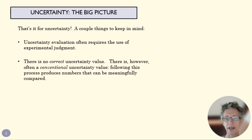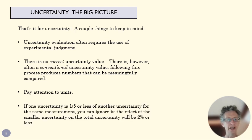There's no correct uncertainty value. This is an estimate. But this is also why we follow a conventional process, right? If we follow the same process as a scientist in California and a scientist in Germany, then we can compare our numbers in a meaningful way and know what those numbers mean. Make sure you pay attention to units and confidence levels when this comes up. Those mistakes get made quite a bit. And then that little trick about combining in quadrature, if an elemental error is small, we can ignore it.